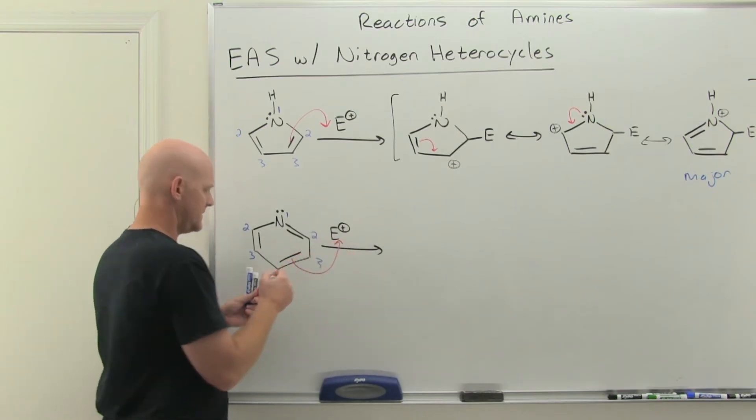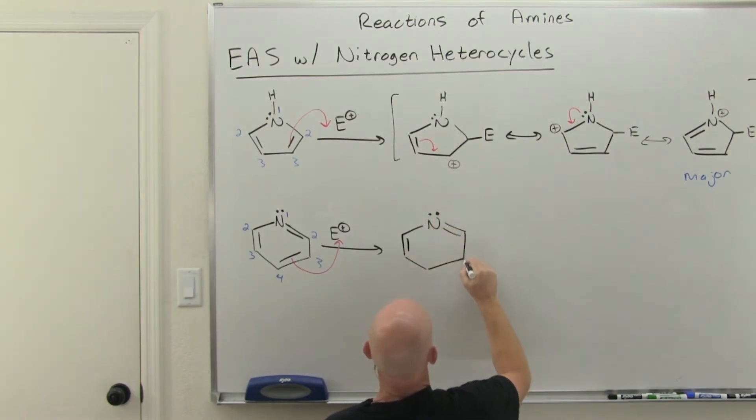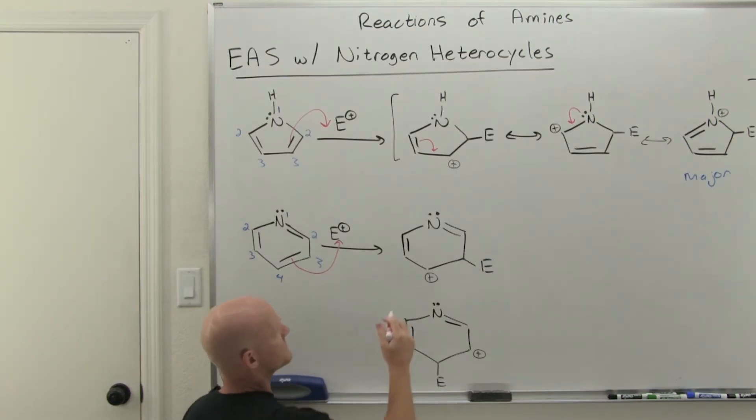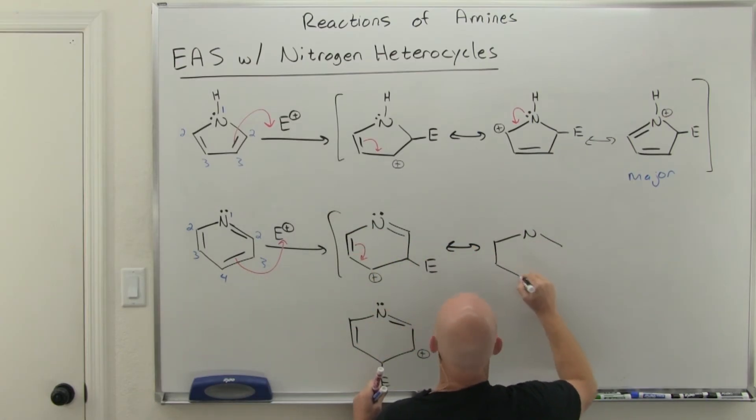And so in this case, we're going to do nucleophilic attack. And that could lead to one of two options here. So we could have it occurring at the three position, leaving a carbocation at the four position, or we could have it occurring at the four position, leaving our carbocation at the three position. Alright, so here's our two options. And if we look at the top one here, we're definitely going to have resonance for one bond away from pi electrons. So we'll move these here.